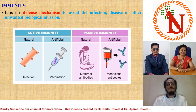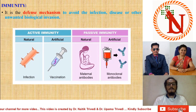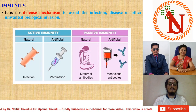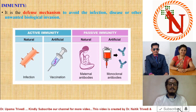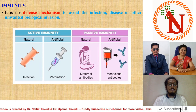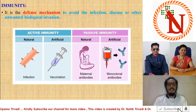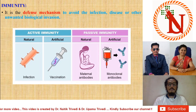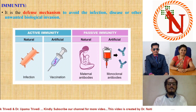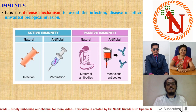Next is passive immunity, which also has two types: natural and artificial. Natural passive immunity means you receive antibodies from your mother — when the mother lactates her child, the child receives antibodies from the mother. The child does not generate antibodies by itself; it takes them from the mother's side. Artificial passive immunity means if your body does not have enough antibodies, you need to take antibodies from outside by blood transfusion or by administering monoclonal antibodies directly.